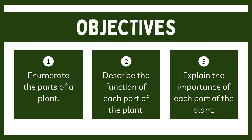As you can see, the objectives here: by the end of this lesson you will be able to do three things. First, you will be able to enumerate — means list down — the different parts of plants. Secondly, you will be able to describe the function of each part, meaning you will understand what each part of the plant does to help the plant stay alive.